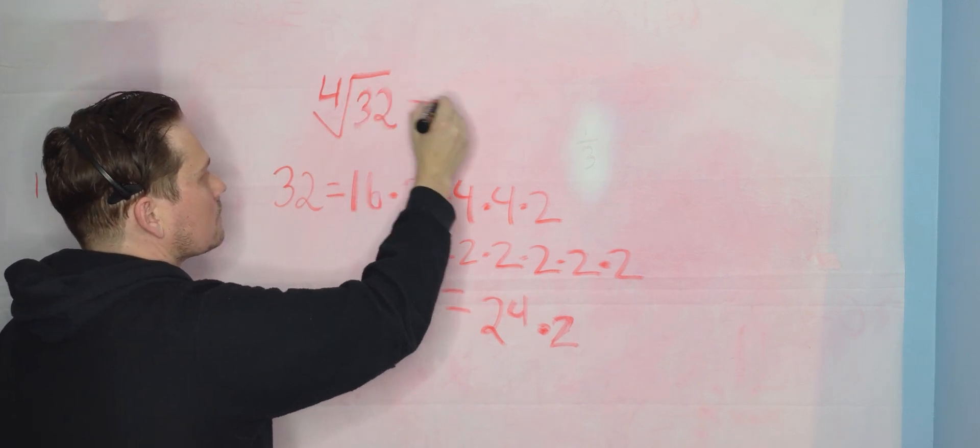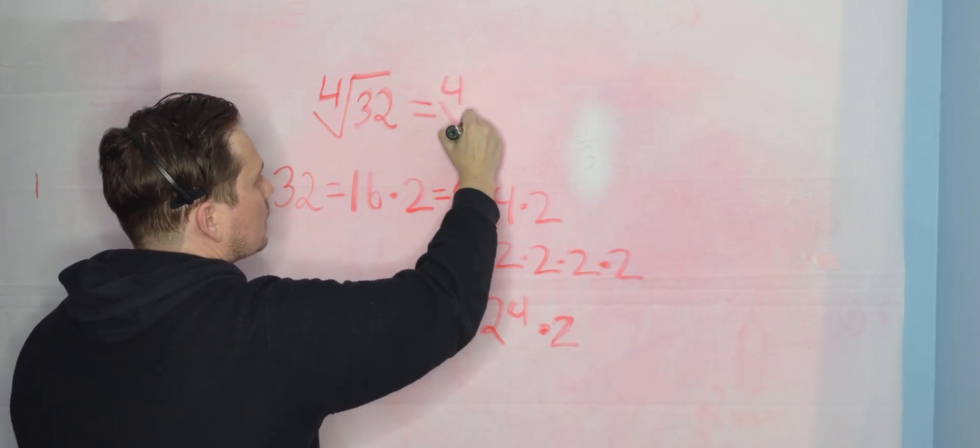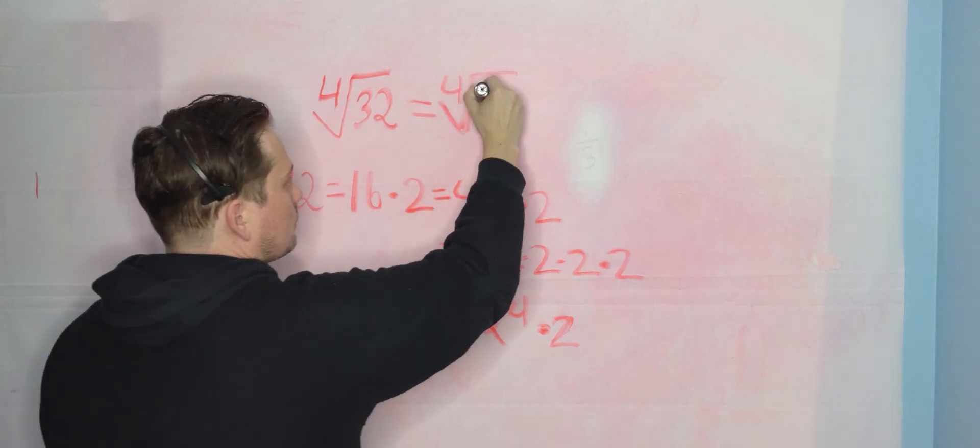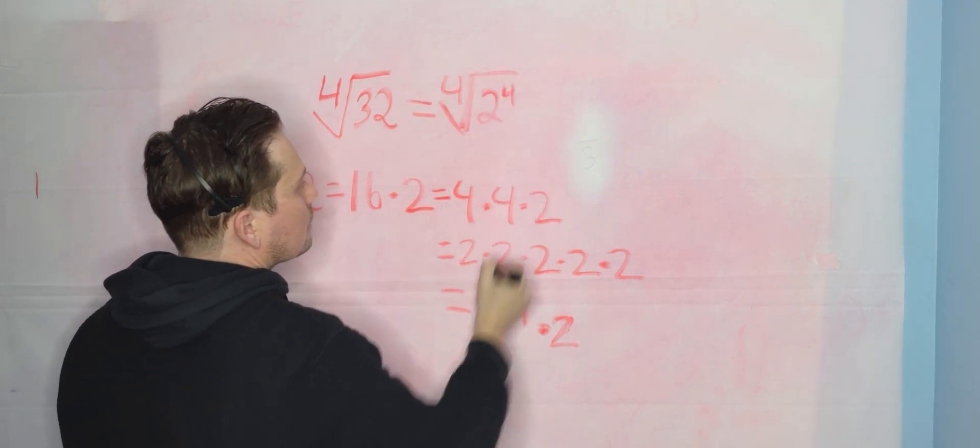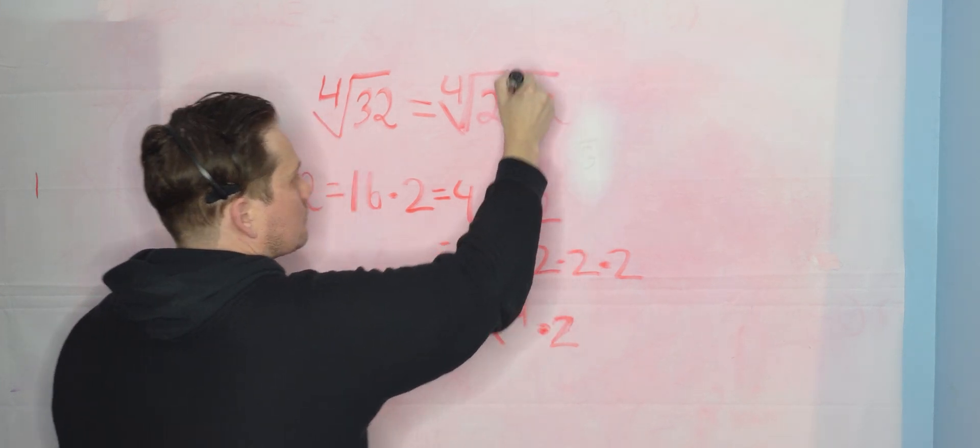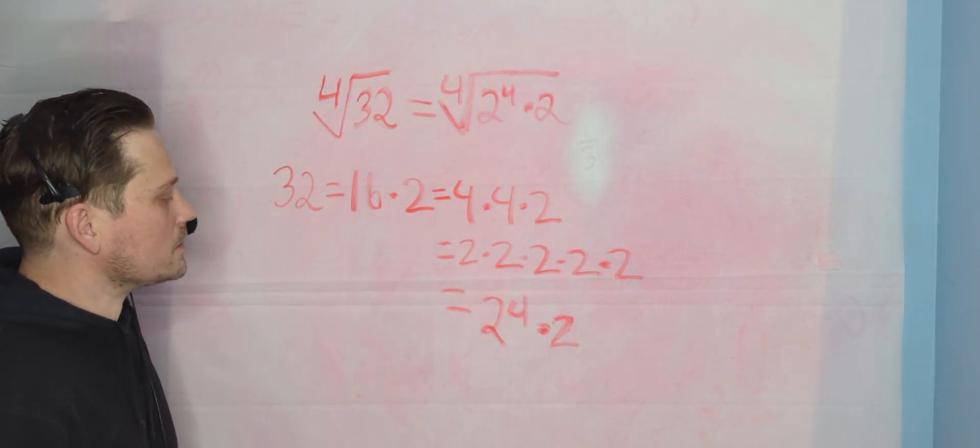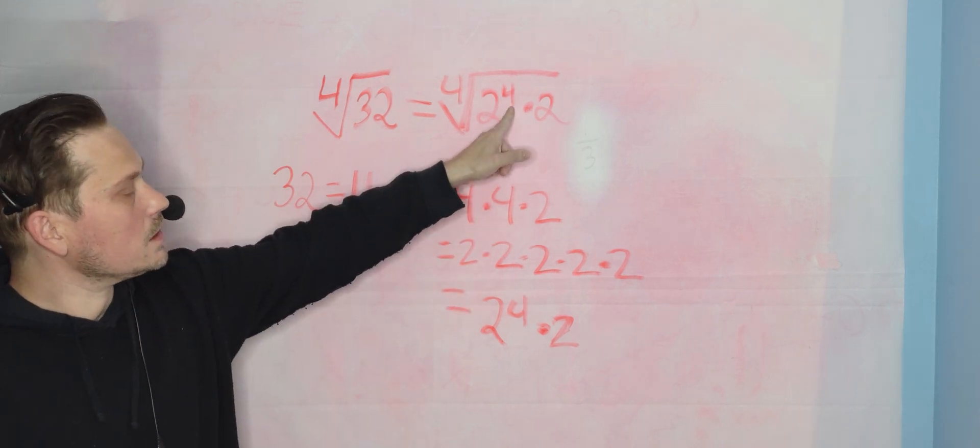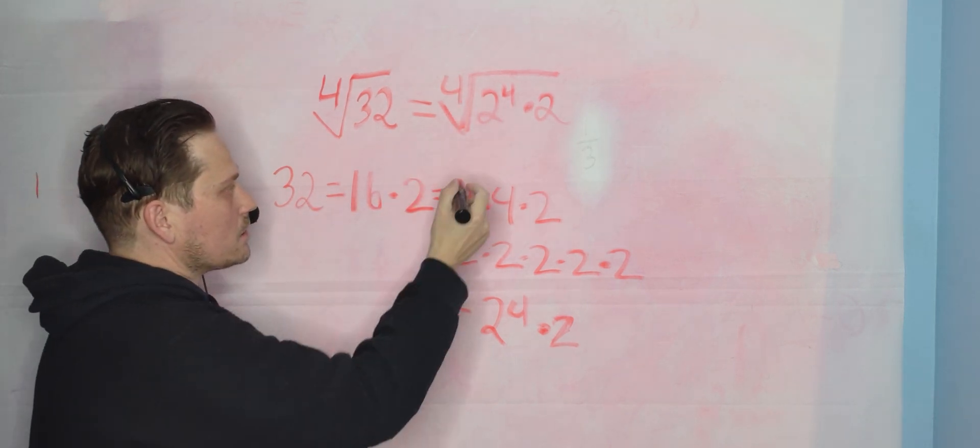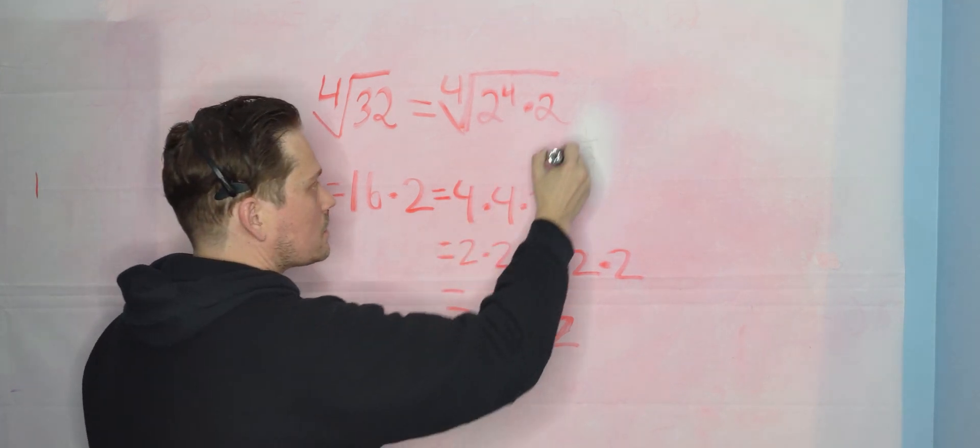So you're going to take this and you're going to write this now as the fourth root of, and then write the following next: 2 to the 4th times the remaining 2 this way. You got to break it up this way. So notice now there's a 4 here in this exponent and there's a 4 in this index here. Now what you can do by a basic rule is you can distribute this over.